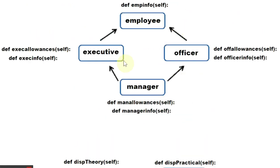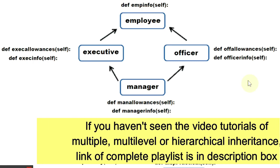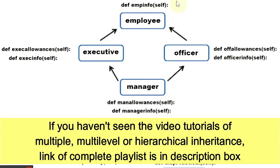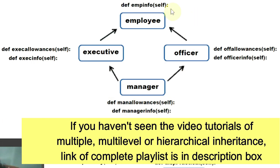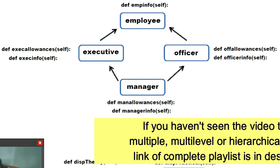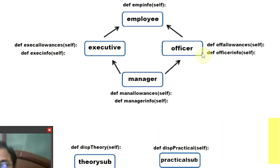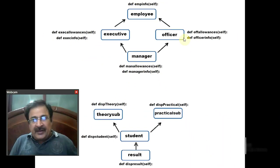We will do one more program. This Employee class will be inherited by both the Executive class and the Officer class — that is hierarchical inheritance. And these Executive and Officer classes will be inherited by the Manager class — that is multiple inheritance. So the mixing of hierarchical and multiple inheritance leads to hybrid inheritance. Watch the video to the end.